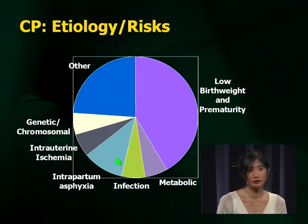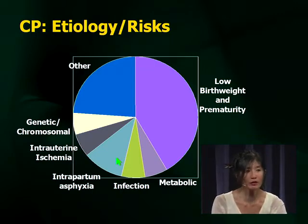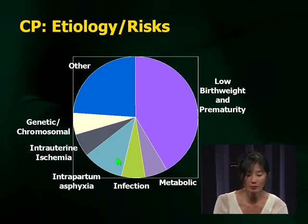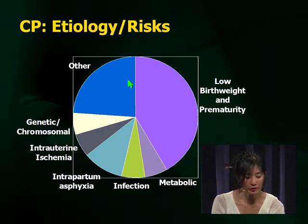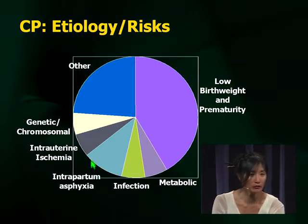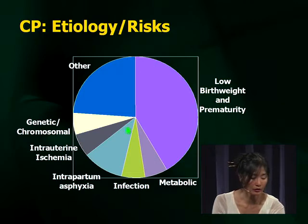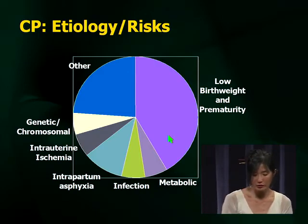Etiology questions appear all the time on examinations. Although there's a lot of talk about birth injury as a cause of CP, the most common reason is low birth weight and prematurity — probably about 40 percent of cases. The issue of asphyxia as etiology of CP constitutes probably less than 10 percent. So low birth weight and prematurity is the answer when asked for the most common etiology of CP.